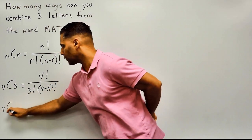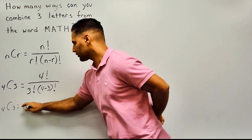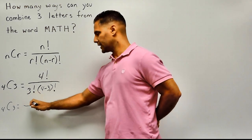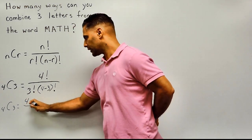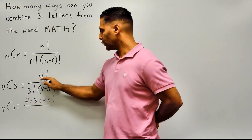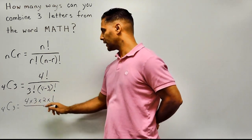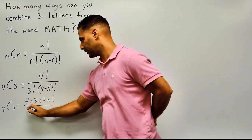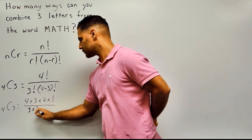So from four objects, we want to figure out how many ways we can combine three. Starting with our numerator, four factorial is just taking a number and multiplying every number below it going to the number one. So four factorial is the same as four times three times two times one. For the denominator, we write three factorial in expanded form: three times two times one.